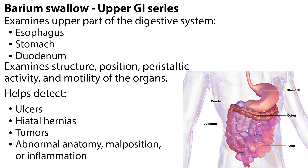The barium swallow helps to detect ulcers, hiatal hernias, tumors, abnormal anatomy, malposition, or inflammation. The upper GI series involves swallowing barium in a milkshake form; however, it tastes unpleasant and may cause vomiting. The test takes about 45 minutes, in which x-rays are taken at various intervals. The nurse needs to ensure the patient is NPO at least 6 hours before the test. Following the test, the patient is given a laxative to quicken the elimination of the barium.